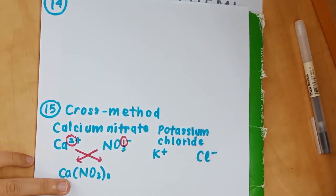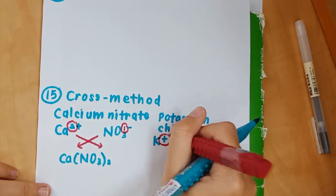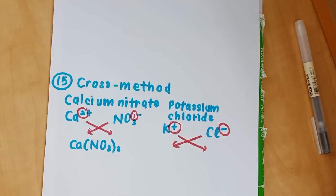Then there's potassium chloride. Both charges are 1, so when you cross you'll just get KCl.